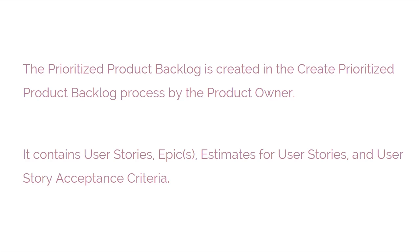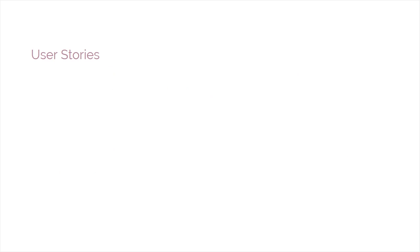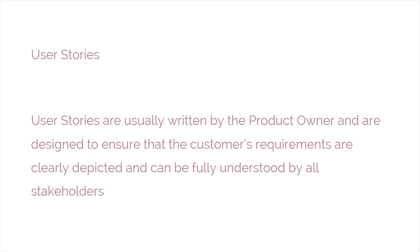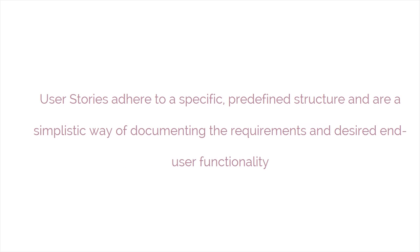The prioritized product backlog contains user stories, epics, estimates for user stories, and user story acceptance criteria. User stories are usually written by the product owner and are designed to ensure that the customer's requirements are clearly depicted and can be fully understood by all stakeholders. User stories adhere to a specific, predefined structure and are a simplistic way of documenting the requirements and desired end-user functionality.